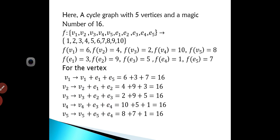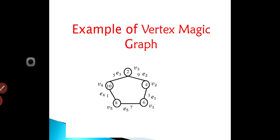Now we see another example of vertex magic labeling. This example is a cycle graph with 5 vertices. It is a cycle graph with vertices V1, V2, V3, V4, and V5. The edges are E1, E2, E3, E4, E5. The labels of the vertices are 6, 4, 2, 10, 8, and the labels of the edges are 3, 9, 5, 1, 7. For vertex V1, the label is 6 and the adjacent edges are E1 and E5, so 6 + 7 + 3.